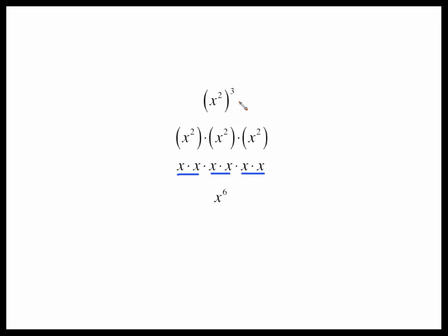If you look back at the problem you may notice that we could get that six exponent by simply taking the exponents of two and three and multiplying them, which leads to the power law.